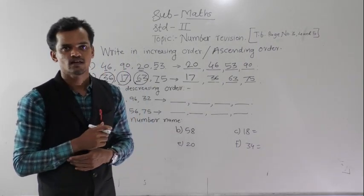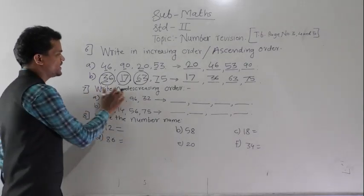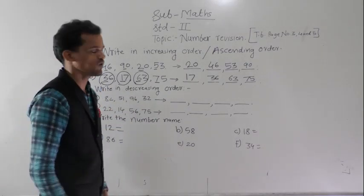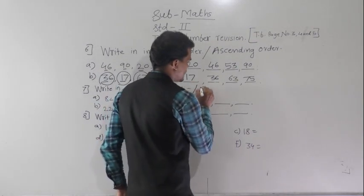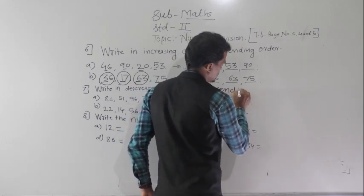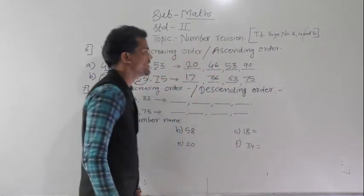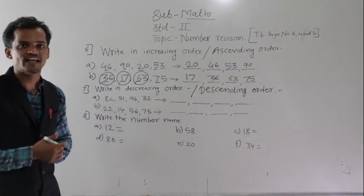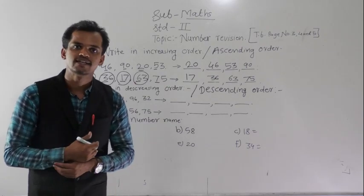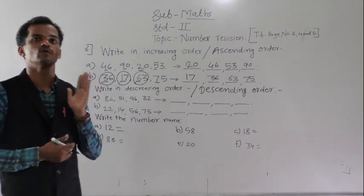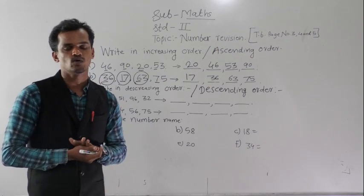The next question says write in decreasing order. Another name for decreasing order is descending order. Descending order means the numbers are arranged from greatest to smallest order. First you have to write the greatest number and then the smallest number.